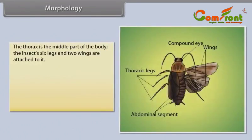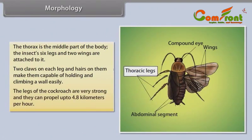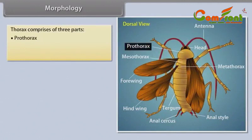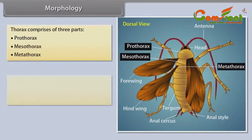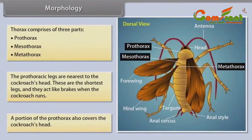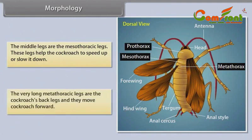Morphology — Thorax: The thorax is the middle part of the body to which the six legs and two wings are attached. Two claws on each leg and hairs make them capable of holding and climbing walls easily. The legs can propel the cockroach up to 4.8 km/h. The thorax comprises three parts: prothorax, mesothorax and metathorax. The prothorax legs are nearest to the head, shortest, and act like brakes when running. The mesothorax legs help the cockroach speed up or slow down. The metathorax legs are the longest and move the cockroach forward.